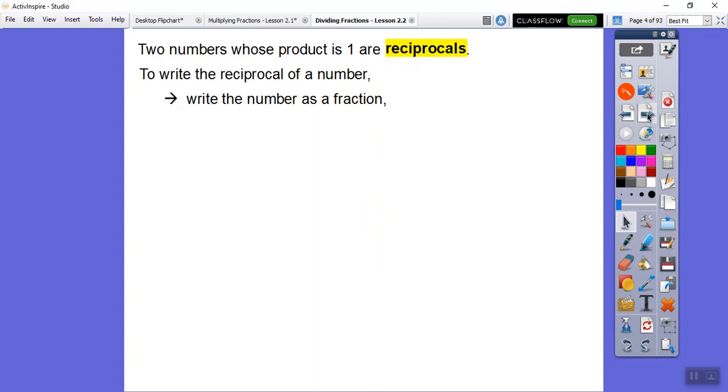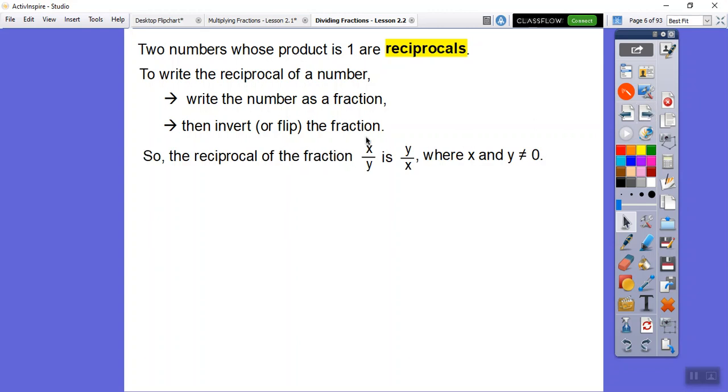To write a reciprocal, then we write the number as a fraction. Sometimes it's not. Sometimes it's a whole number, so you put it over one and change it to a fraction. Then you invert or flip the fraction. So the reciprocal of x over y is y over x. Now remember, that sticky little thing that you can't have zero in the denominator.